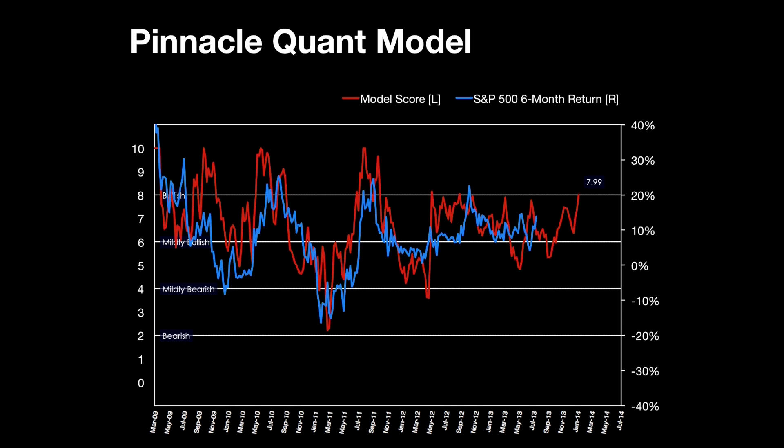Very recently the model has moved higher and almost touched the 8 line, which separates the mildly bullish bracket from the bullish bracket. The chart goes back five years, but the model's inception is 1990. Since then, the R-squared has been 45%, which tells us how good the predictive power of the model is — 45% is a pretty significant result.